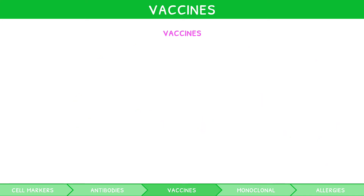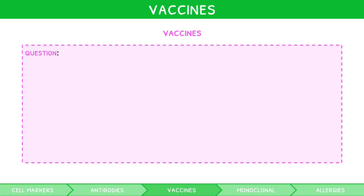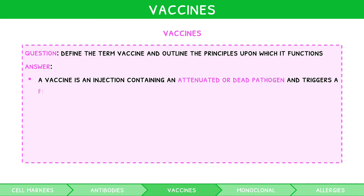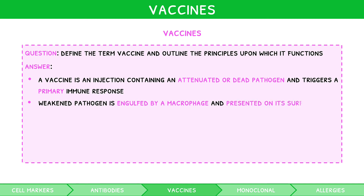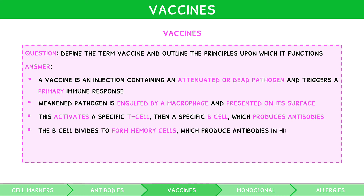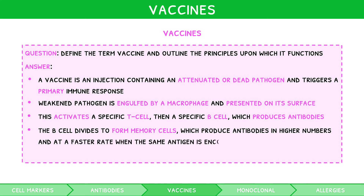Vaccines are a common topic in the exam, so let's cover a common exam question to solidify their role. Define the term vaccine and outline the principles on which it functions. A vaccine is an injection containing an attenuated or dead pathogen, and it triggers a primary immune response. The weakened pathogen is engulfed by a macrophage and presented on its surface bound to MHC. This activates a specific T cell, which in turn activates a specific B cell, which produces antibodies. The B cell also divides to form memory cells, which produce antibodies in higher numbers and at a faster rate when the same antigen is encountered, killing the pathogen before symptoms occur.